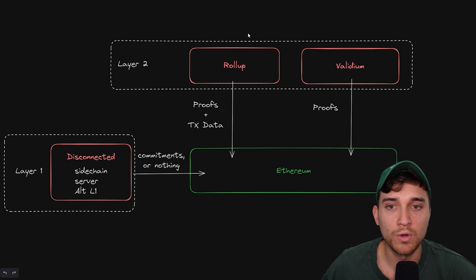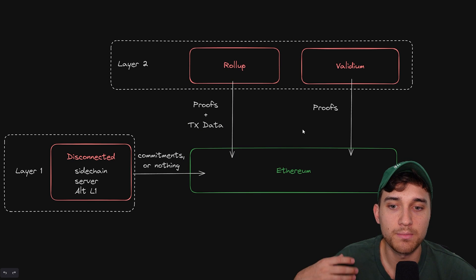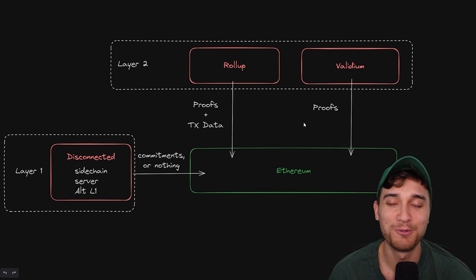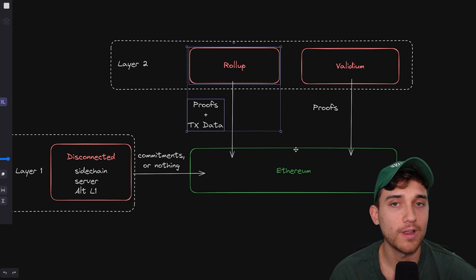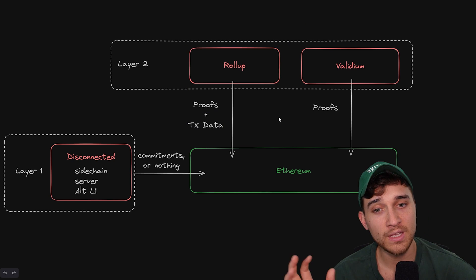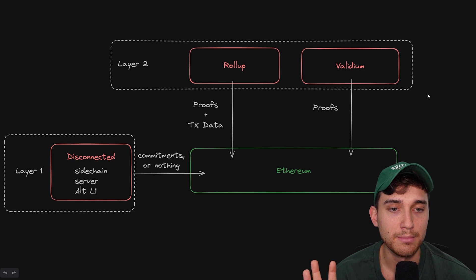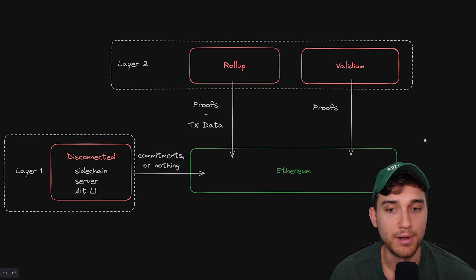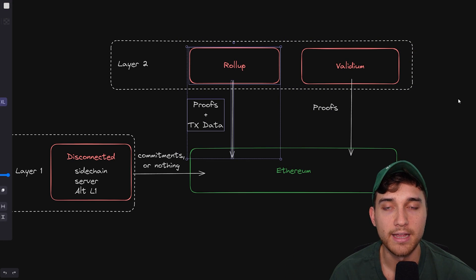Layer 2 solutions build on top of Ethereum and therefore inherit more of its decentralization and security properties. The two types of layer twos broadly categorized here are rollups and validiums. Rollups post proofs — either ZK proofs for a ZK rollup, or fraud/fault proofs for an optimistic rollup — alongside all of the transaction data back to Ethereum. Validiums, on the other hand, only post the proofs and not the transaction data, optimizing more for cost savings. So rollups are more secure compared to validiums, while validiums are more scalable and cost-optimized.